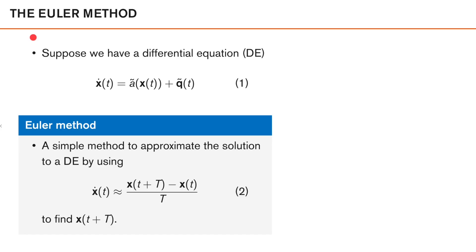Let us first look at the Euler method. Suppose we have a differential equation where on the left-hand side we have the time derivative of our state sequence, describing how the state sequence varies over time. Note that a-tilde here could be a nonlinear function. The Euler method is a quite simple method to approximate the solution of the differential equation.